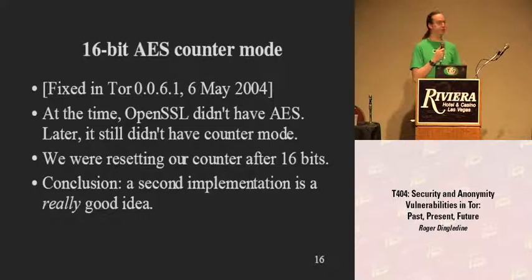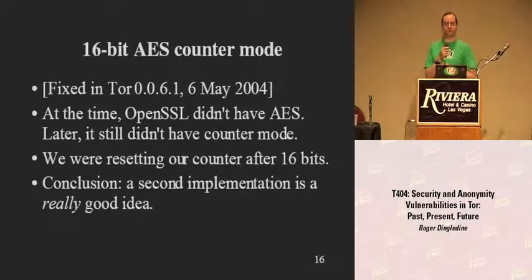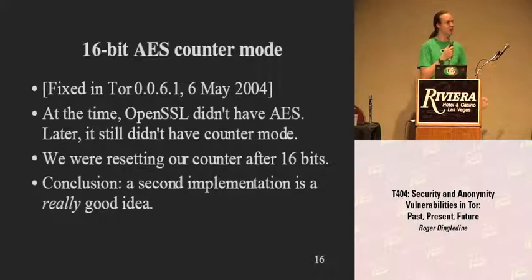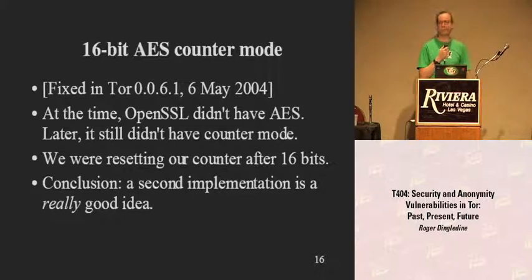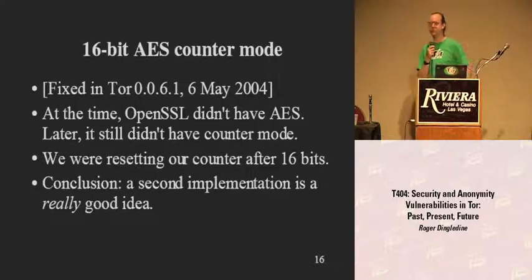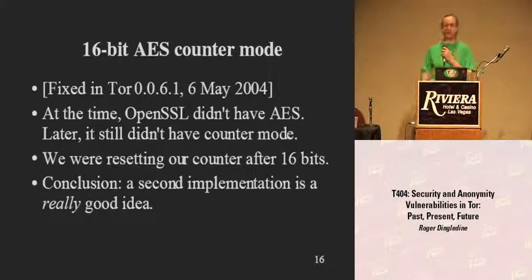It was not until we had a second implementation that we caught it. Some folks writing a Java client at Dresden University showed up and said their compatible client works great except after the first cell, all the encryption is different. It turned out they were using AES counter-mode correctly, and we were using something a lot closer to 16-bit AES counter-mode — and 16 bits is really not enough security. Having two implementations, as the IETF people say, turns out to be a really good idea.